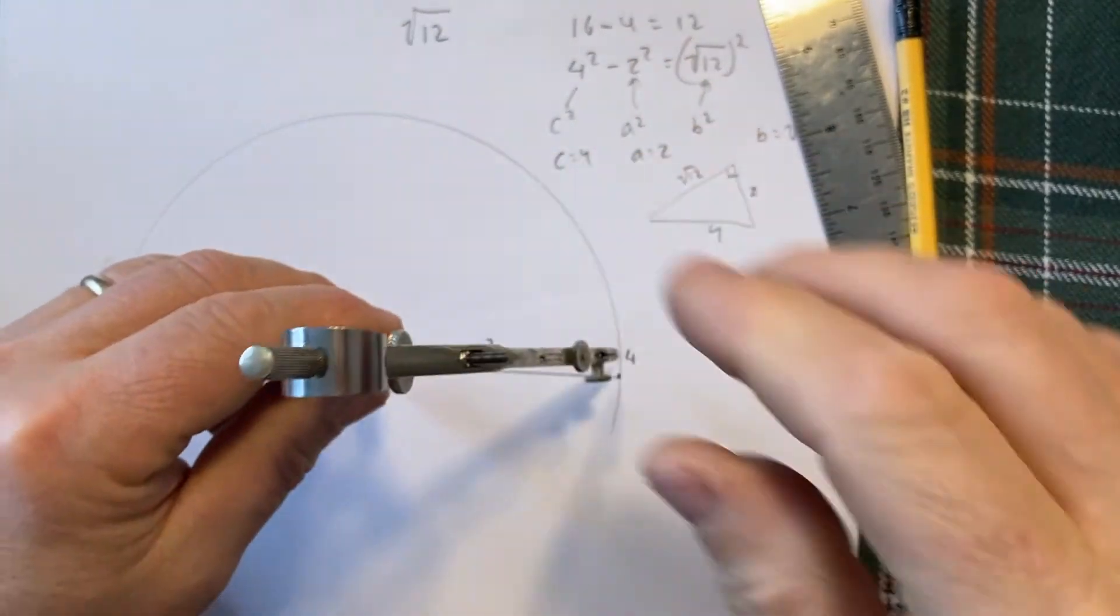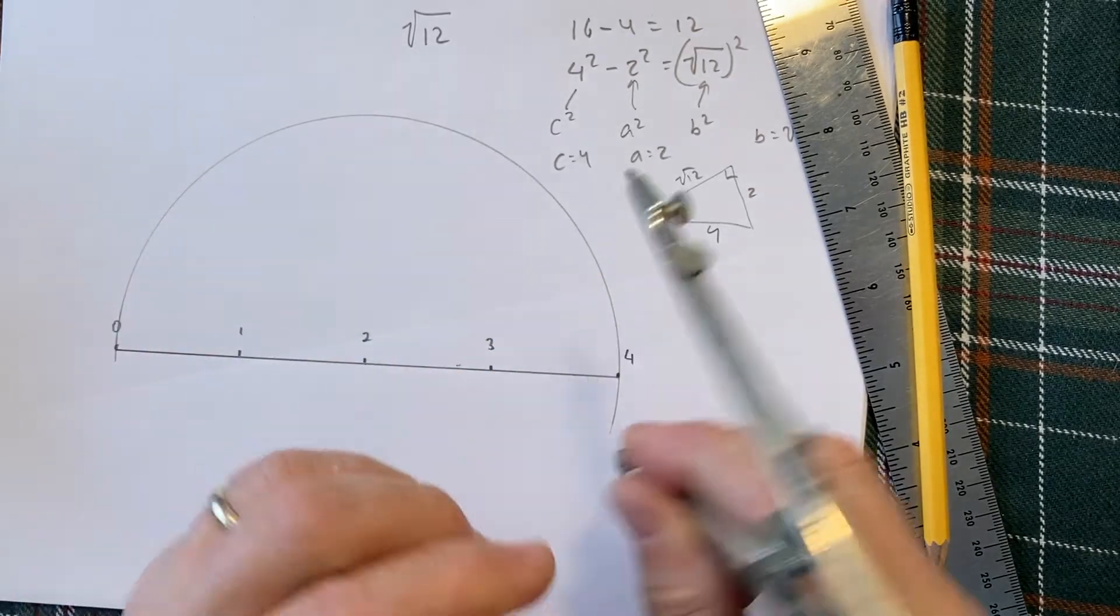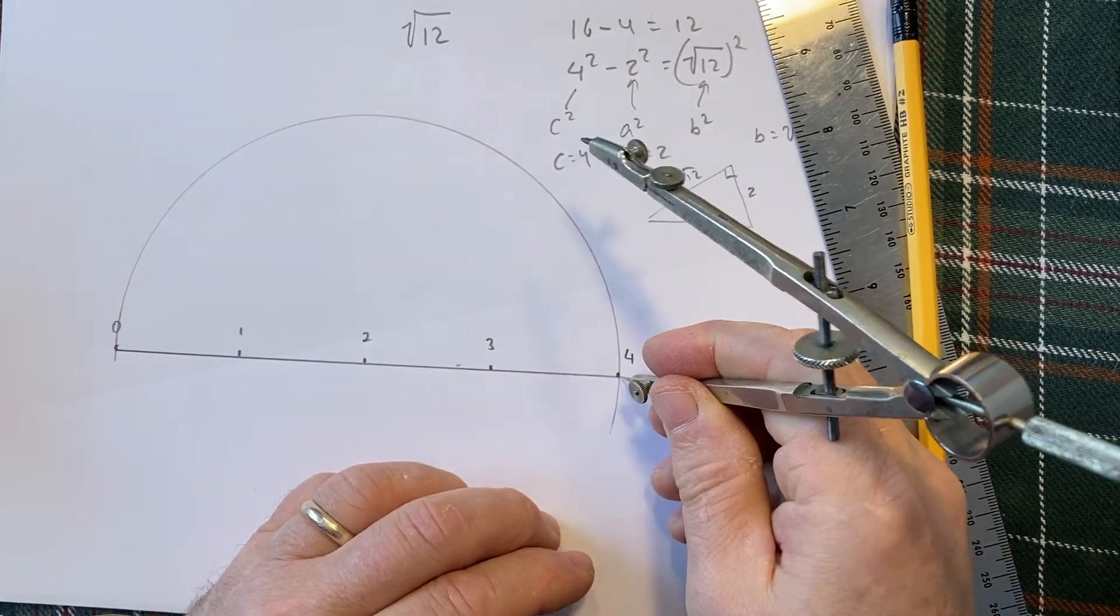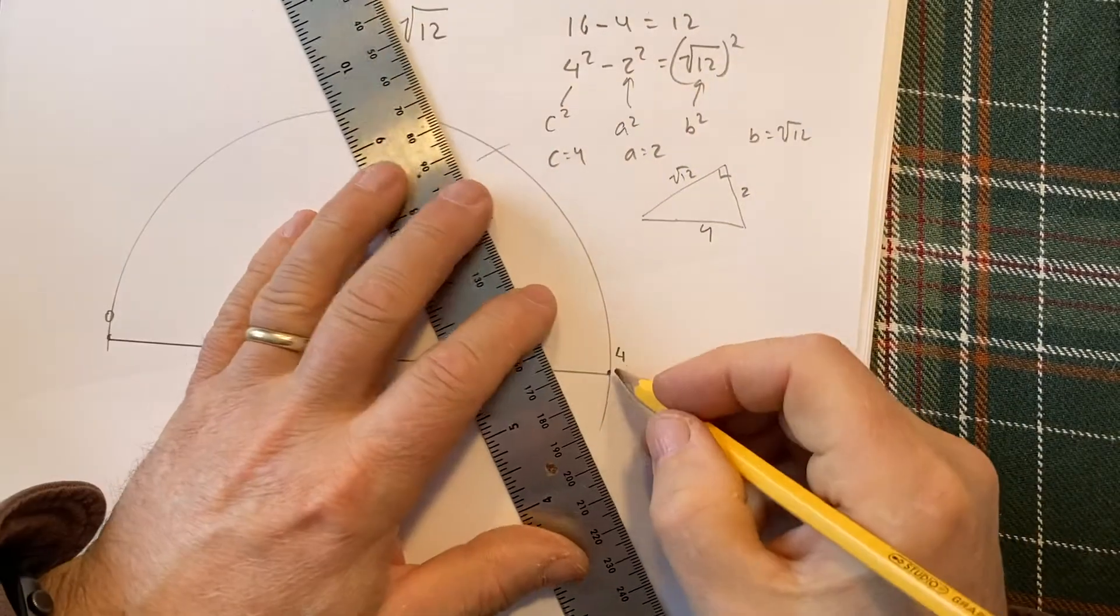Then I need to make the 2. Which I've already done here. This is already too long. So I'm going to go to my 4 and mark off this length is my 2. There's your right angle triangle. I have 4, 2.